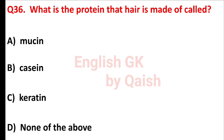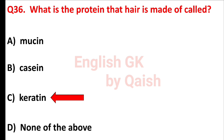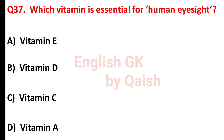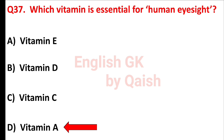What is the protein that hair is made of? Answer is option C, keratin. Which vitamin is essential for human eyesight? Answer is option D, vitamin A.